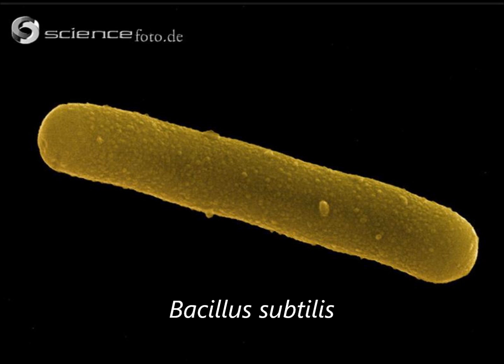Bacillus subtilis, also known as hay or grass bacillus, is a gram-positive, catalase-positive bacterium. It is rod-shaped and an obligate aerobe. Bacillus is commonly found in soil and in the gut of humans, and is also known for its ability to form a tough, protective endospore.